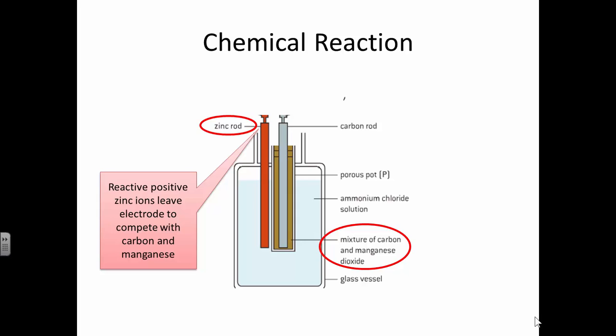So this reactive positive zinc ions leave the electrode to compete with the carbon and the manganese. And in doing that they release electrons. So that's what a cell is. Electrons are produced on this electrode and they are taken in on this electrode. So we basically have a negative and a positive terminal of this cell.